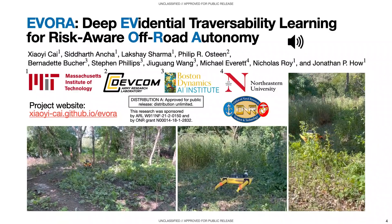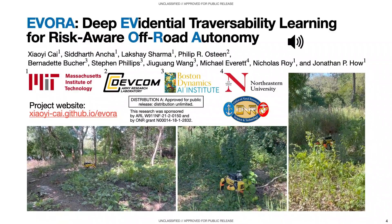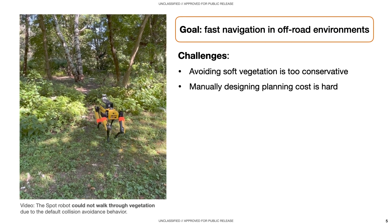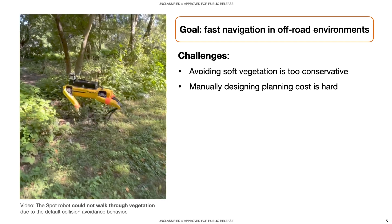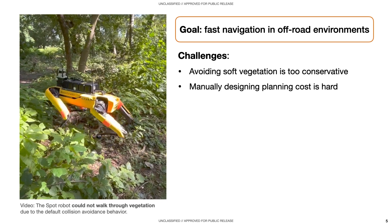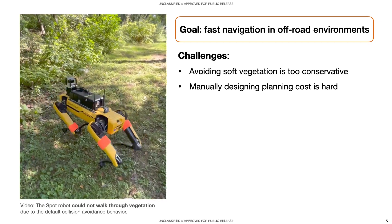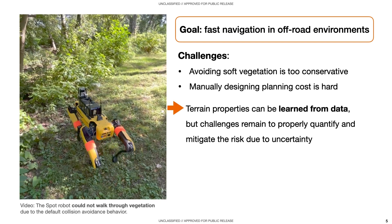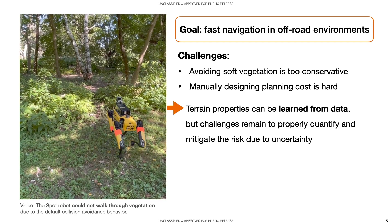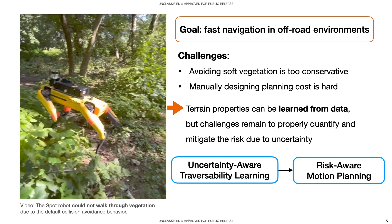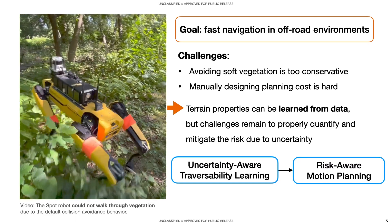We present VORA, an evidential learning-based pipeline for traversability learning and off-road navigation. The goal is to achieve fast navigation in off-road environments with vegetation, such as the one shown on the left. The Spot robot struggled to walk through vegetation because it wanted to avoid terrains with high elevations. While manually designing planning costs using semantic and geometric information may lead to desired behaviors, cost tuning requires a lot of human expertise. Instead, existing methods learn terrain properties directly from data to reduce human efforts, but challenges remain to properly quantify and mitigate risk due to uncertainty.